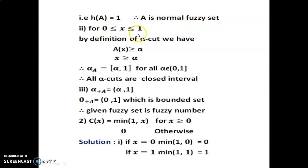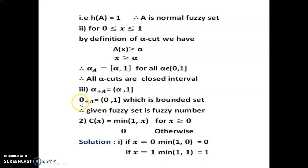Condition 2: For the interval [0,1], by definition of alpha-cut we have A(x) ≥ alpha. Since A(x) = x, the alpha-cut equals the closed interval [alpha, 1] for all alpha in (0, 1]. Therefore all alpha-cuts are closed intervals. Condition 3: The strong alpha-cut equals the semi-open interval (alpha, 1]. Setting alpha = 0, the 0-cut is (0, 1], which is a bounded set as both values are finite. Therefore the given fuzzy set is a fuzzy number.